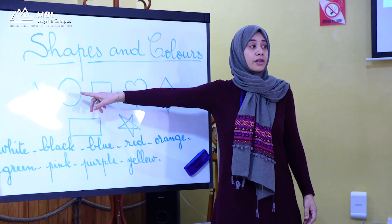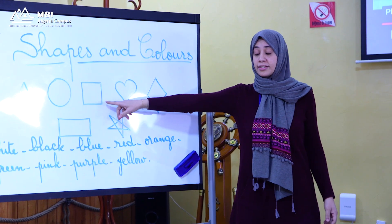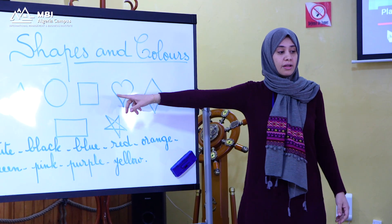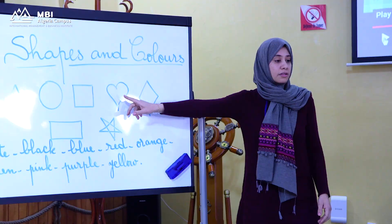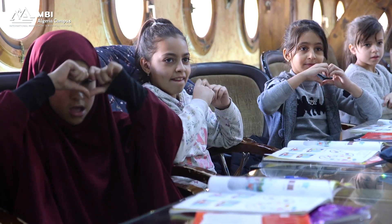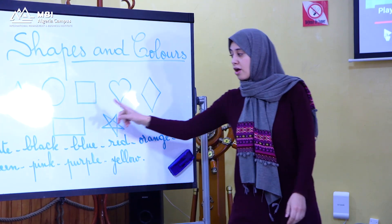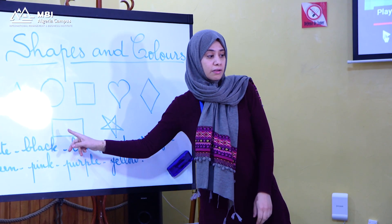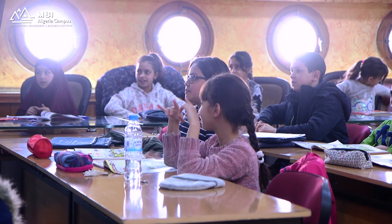A circle, a circle, a square. A heart, a diamond, a diamond, a rectangle, a rectangle, a star.